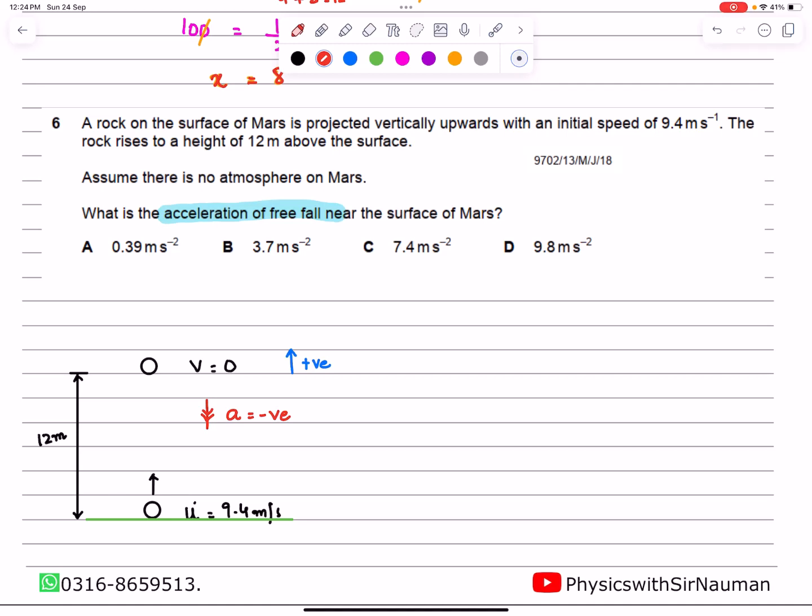Using the formula 2as = v² - u², with constant acceleration, distance of 12 meters, final velocity of 0, and initial velocity of 9.4: 2a(12) = 0² - (9.4)²